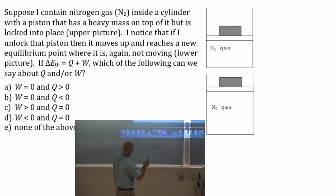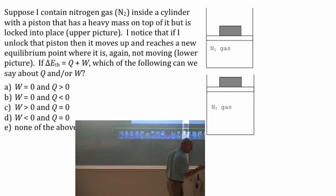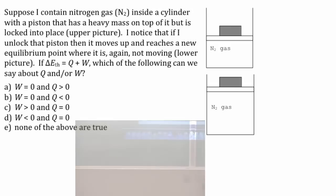So delta E thermal is Q plus W, which of the following can we say about Q and or W in this particular situation? I've asked you before, but unless you remember exactly what the answer is, you'll have to figure it out again.